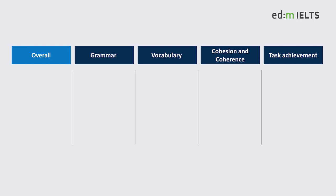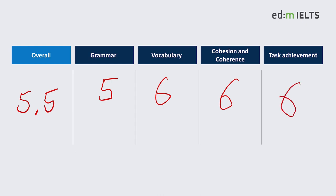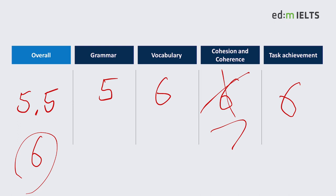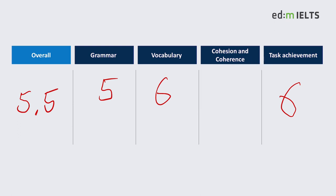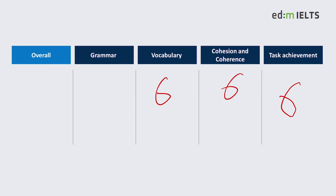What would I give this? Overall, I gave 5.5. Grammar: 5. Vocabulary: 6. Cohesion and coherence: 6. Task achievement: 6. For individual parts, you don't round up — so if grammar were 5 and all others were 6, the overall score would be 5.5, because of how the individual part scoring works.